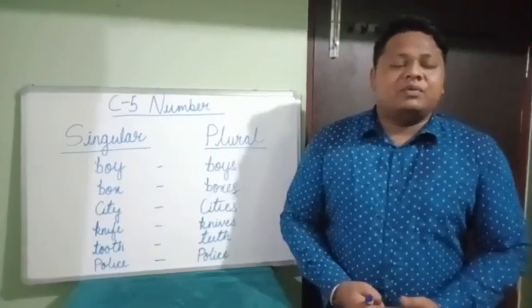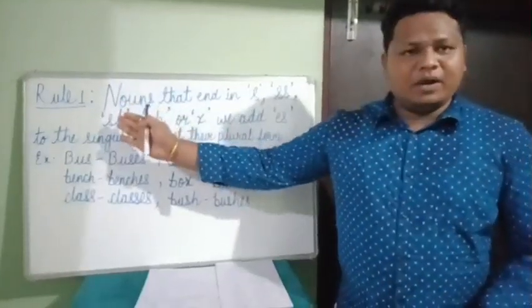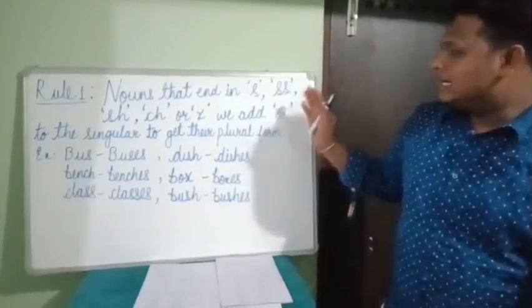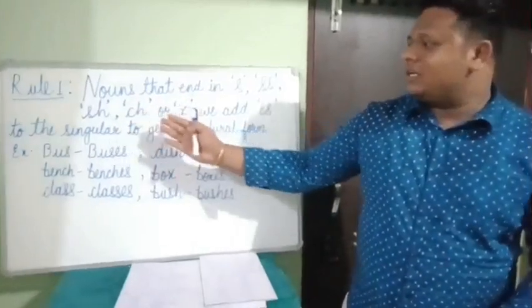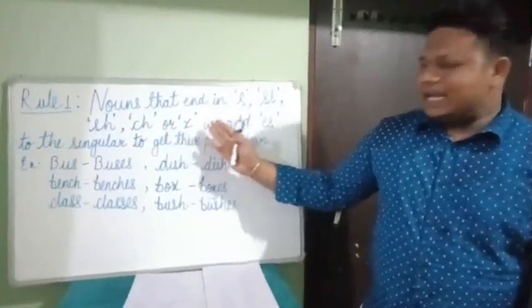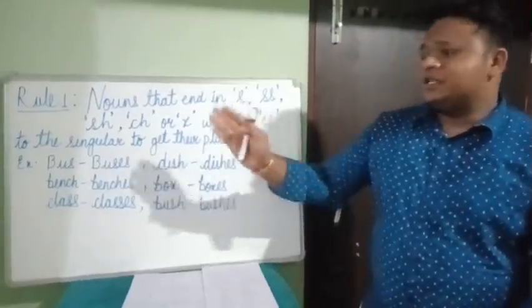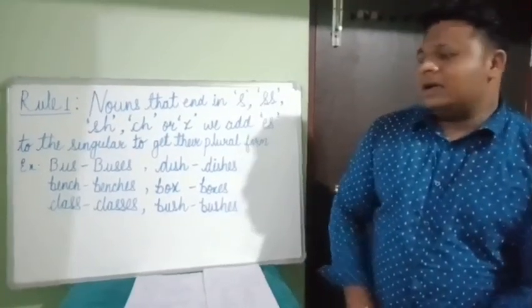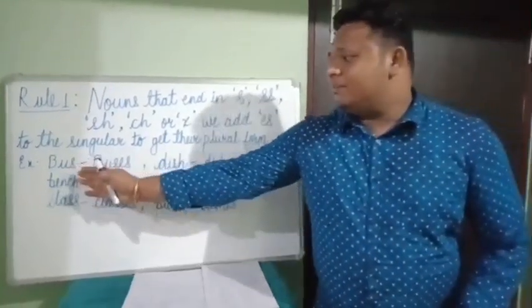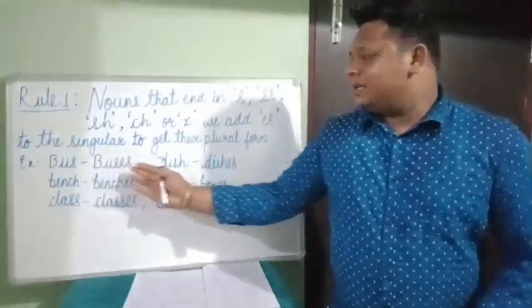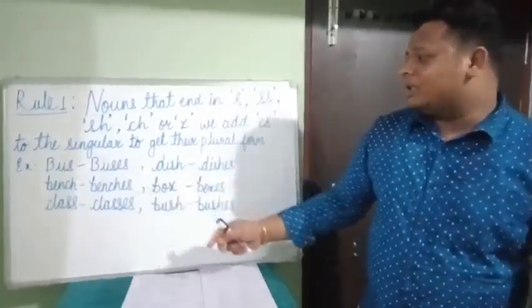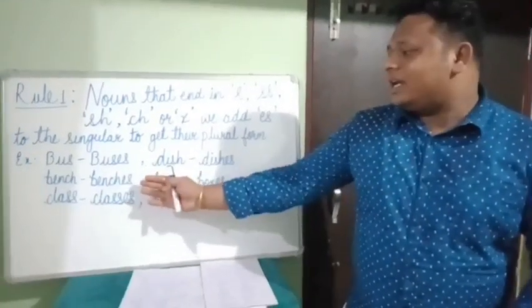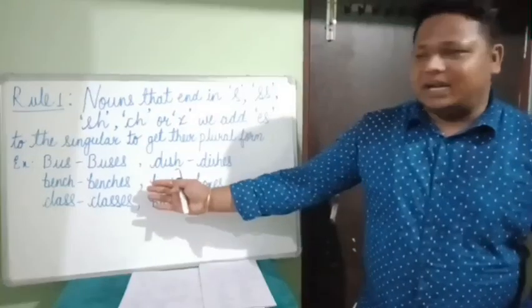Rule number one: the noun that ends in S, SS, SH, CH, or X — we add ES to the singular to make the plural form. Let us see some examples. Bus ends with S, so we add ES to make its plural. Bench ends with CH, so we add ES to make the plural — benches.